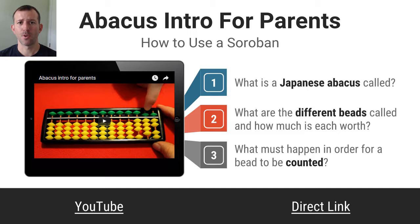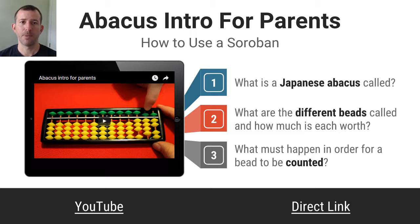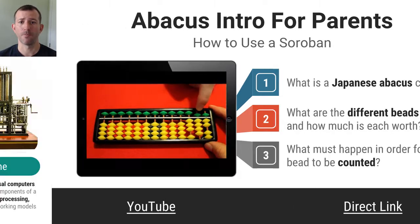I've got a video that you're going to watch and some activities that are going to teach you how to use an abacus — a Japanese abacus which is called the Soroban. If you've never done this before, this is very enlightening. It will give you some insight into what it must have been like to be an early human being and what counting devices were at your disposal. Whenever you see one of these slides, watch the video and make sure you can answer the three guiding questions before you move on.